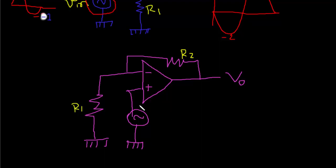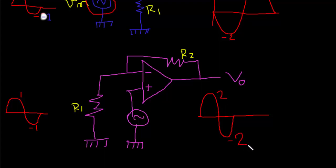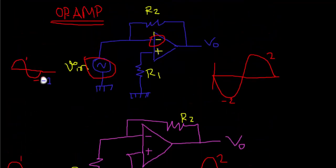If we give input here, this is 1 and this is minus 1, the output will be V out, same phase but amplifying to 2 and minus 2.